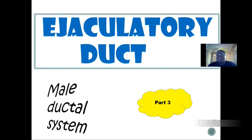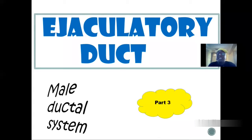Today we'll be talking about the ejaculatory duct. The ejaculatory duct is the third region of the male ductile system after the epididymis and the vas deferens. We've done a lecture on the epididymis and the vas deferens — you can go and check that to fit into this lecture.